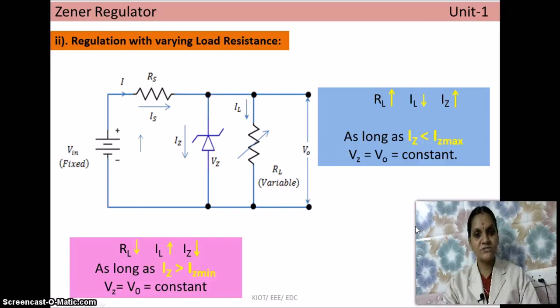At the end of this video you should understand how a zener diode acts as a shunt regulator and how, whatever changes occur in the load or source, the zener diode maintains a constant voltage at the output. Keep watching for the next type of regulator — transistor series and transistor shunt regulators. See you in the next video. Thanks for watching.